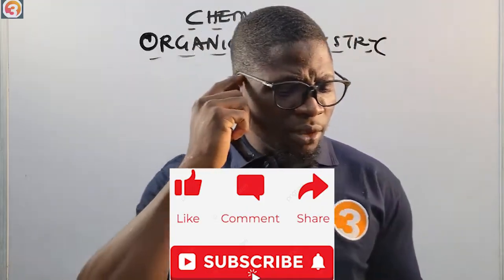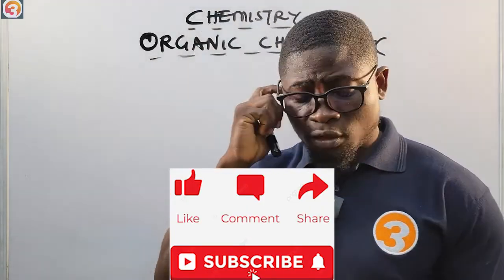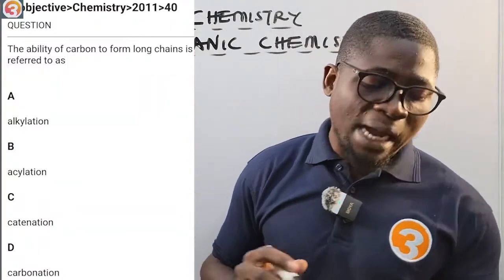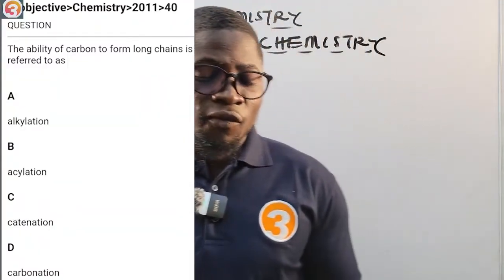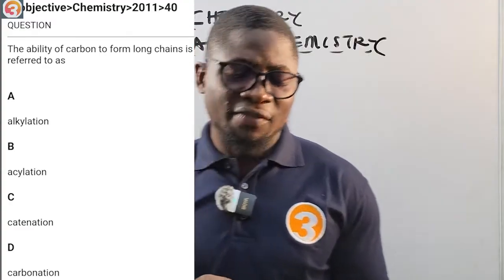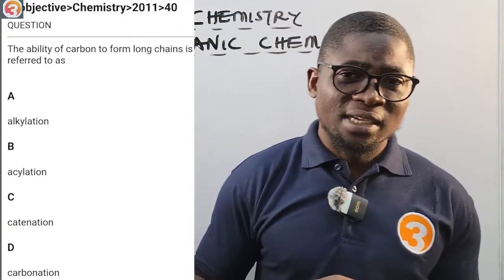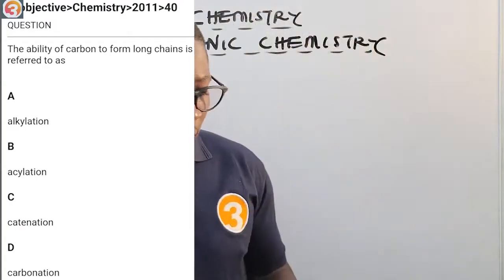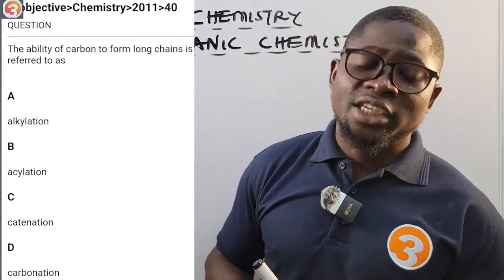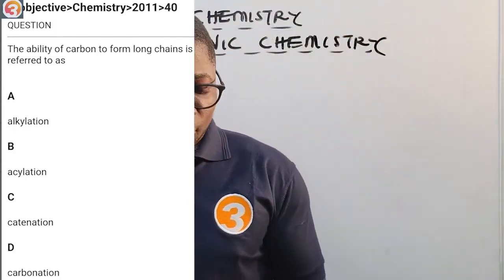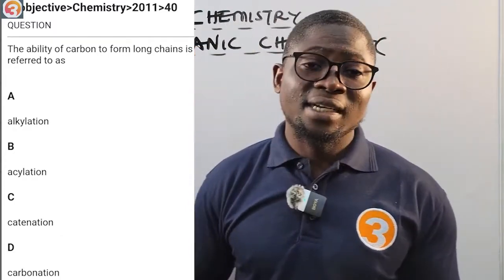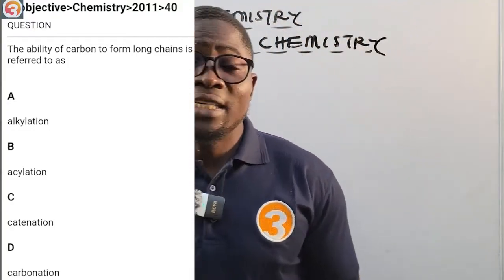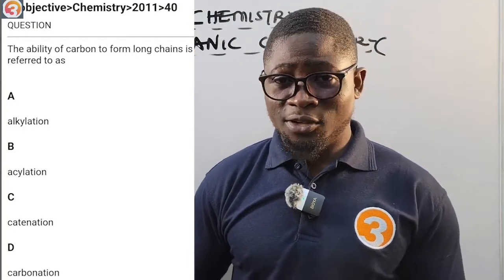Let's take a question from the app. This is 2011, question number 40: 'The ability of carbon to form long chains is referred to as — A) alkylation, B) isolation, C) catenation, D) carbonation.' Keep the answer in your mind; we'll come back to this question.